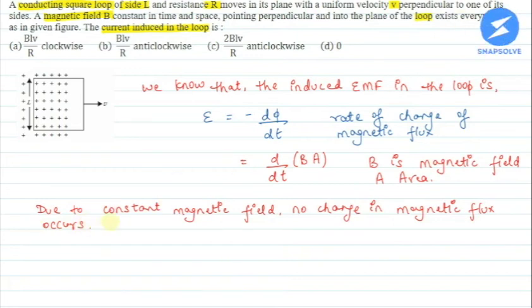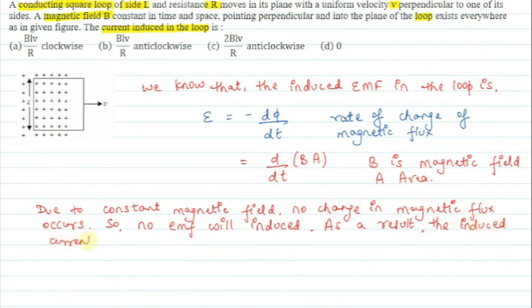So no EMF will be induced. As a result, the induced current in the loop is 0.